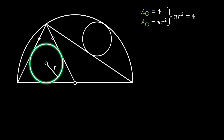Now let's have a look at our triangle. We know that the base of this triangle is actually the radius of our half circle, which we can label as a. But if you notice, the radius of our half circle is also the right leg of our isosceles triangle. This of course means that the other leg is also equal to a. So we can conclude that this triangle is actually an equilateral triangle.